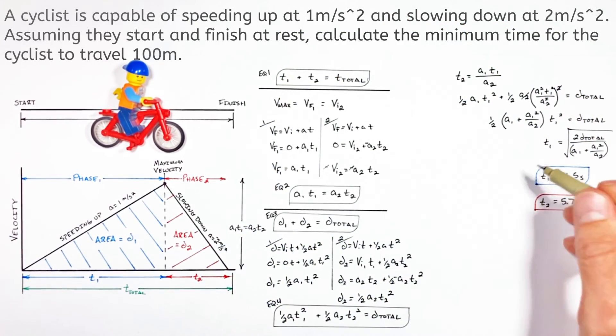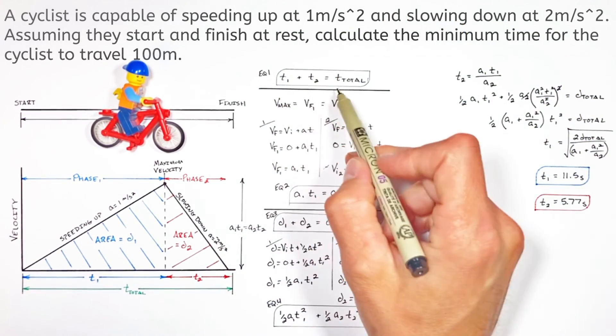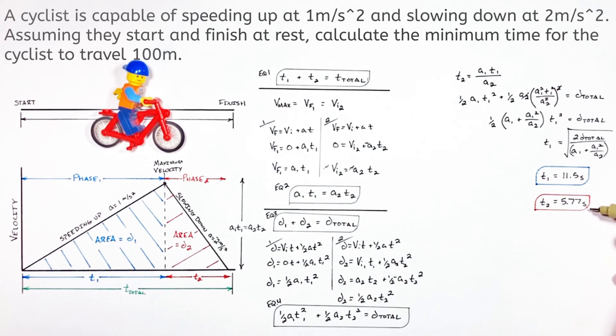So knowing the times from the two phases of motion, we can go back up to equation one and solve for the total time it's going to take our little dude to travel these 100 meters. And we find the shortest time our little guy can make this trip in is 17.3 seconds.